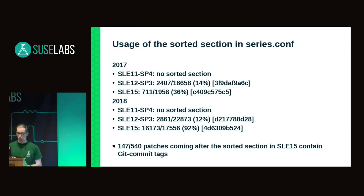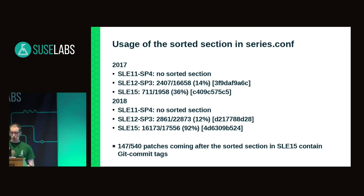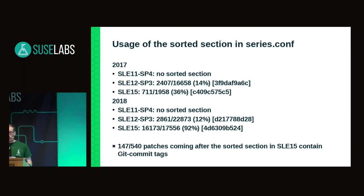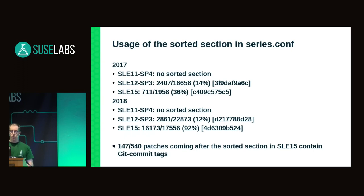While preparing the presentation, I found just over 500 patches outside of the sorted section. With a quick look, about 150 of them contain a git-commit tag — so in principle these should be inside the sorted section. I didn't look into why they are outside, but this is potentially some low-hanging fruit if somebody wants to do some cleanup on kernel-source.